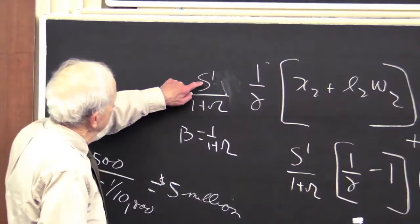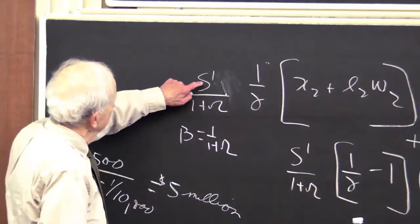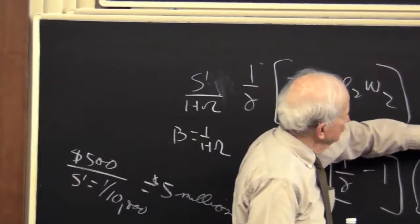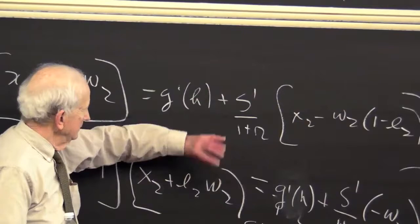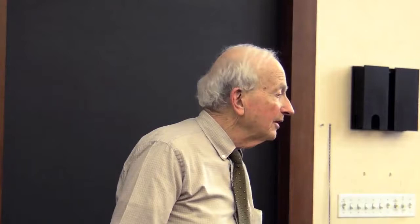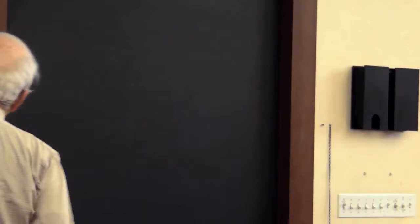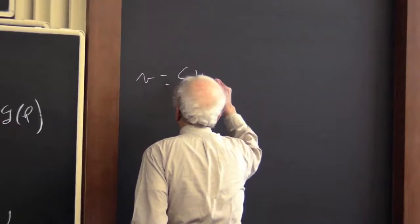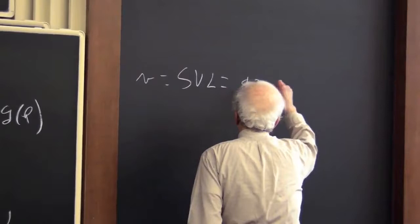It's like taking S-prime, changing it by 1 in 10,000, dividing it by this term on the right. The numerator is $500, and that divided by 1 over 10,000 gives $5 million. That's how people get what they call the statistical value of life — PSVL — anywhere from $3 to $7 million.